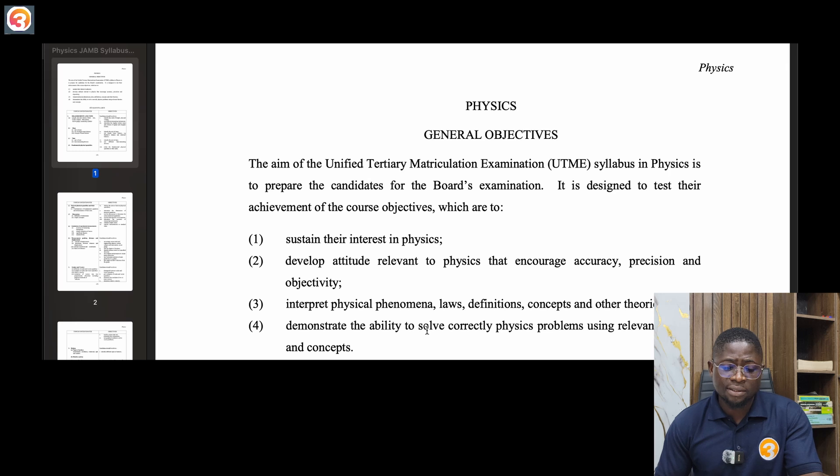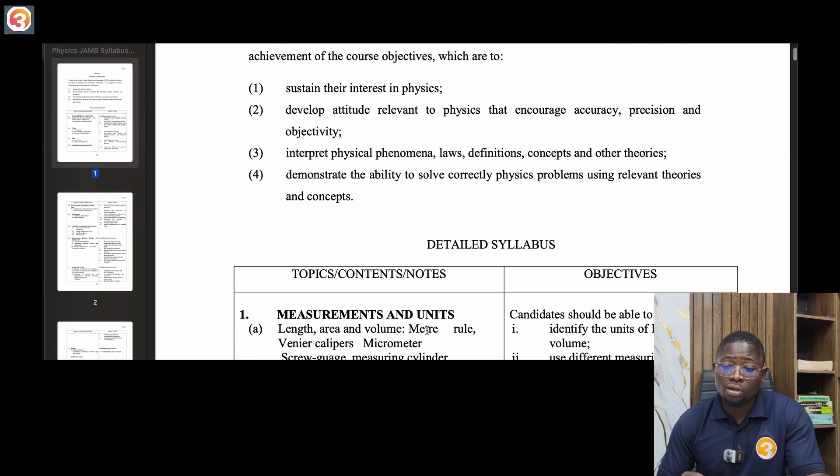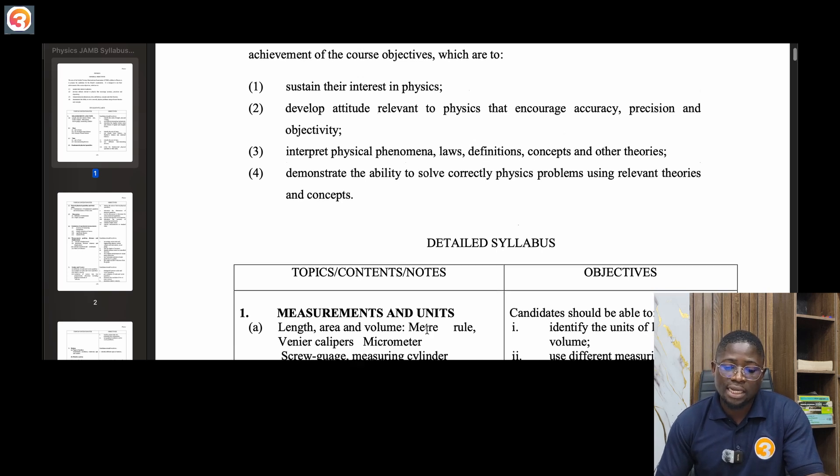The general objective for the JAM physics syllabus is to prepare the candidate for the board examination. It is designed to test the achievement of the course objectives which are to sustain interest in physics, develop attitude relevant to physics that encourage accuracy, precision and objectivity, interpret physical phenomena, laws, definitions, concepts and other theories, demonstrate the ability to solve correctly physics problems using relevant theories and concepts.